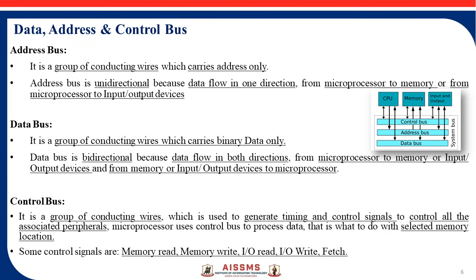Data bus is just opposite to address bus. It is a group of conducting wires that carry binary data, like 1001, for execution. The data bus is bidirectional because data can flow in both directions — from processor to memory or memory to processor, and from processor to I/O devices or I/O devices to processor.